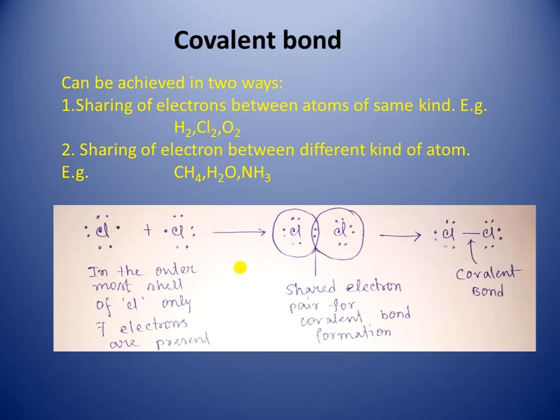Covalent bonds can be achieved in two ways: first, sharing of electrons between atoms of the same kind, for example H₂, Cl₂, O₂; second, sharing of electrons between different kinds of atoms like CH₄ (methane), H₂O (water), NH₃ (ammonia). For example, in chlorine molecule two chlorine atoms are bonded with each other by a covalent bond.